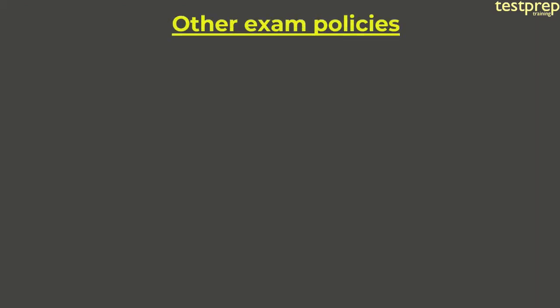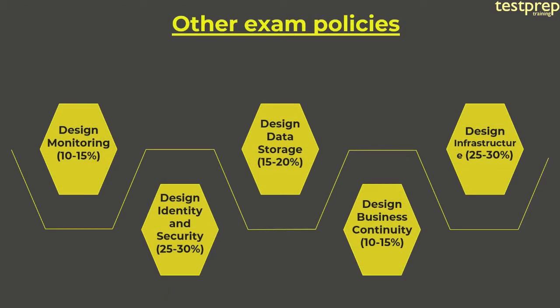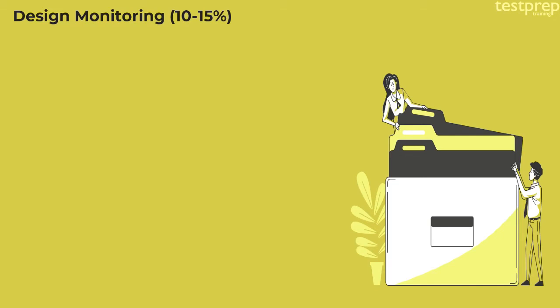Other exam policies — exam domains. Number one: Design Monitoring, comprising 10-15% weightage. Number two: Design Identity and Security, comprising 25-30% weightage. Number three: Design Data Storage, comprising 15-20% weightage. Number four: Design Business Continuity, comprising 10-15% weightage. Number five: Design Infrastructure, comprising 25-30% weightage. We will discuss each domain in detail.